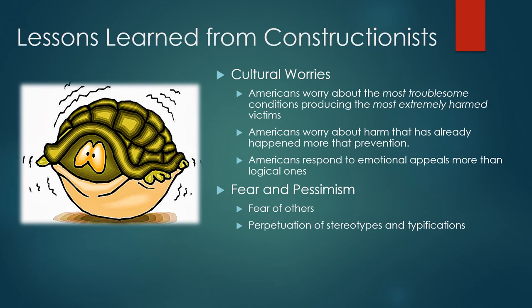Understanding the claims-making process also helps us understand fear and pessimism in our culture, and especially fear of others. When you are creating or perpetuating typifications — and sometimes those typifications are stereotypes — you can create a situation where, in your effort to make a social problems claim, you construct "the other" as being the problem. If you understand the process of social problems claims — the need to simplify, to be concise — you can see how these stereotypes and typifications become perpetuated. This digs deeper than just documenting incidences; it helps us understand how these things work.